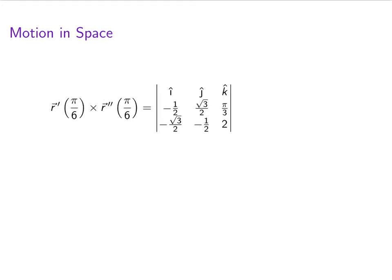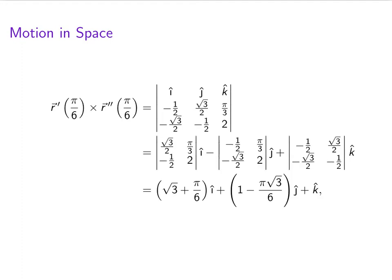The last thing we'll need to compute is r prime of pi over 6 crossed r double prime of pi over 6. And if we work all that out, we get an expression that looks like this: square root of 3 plus pi over 6 i plus 1 minus pi root 3 over 6 j plus k.